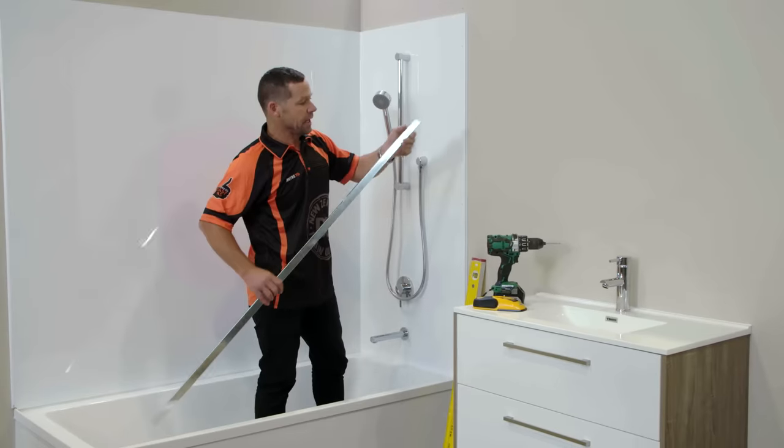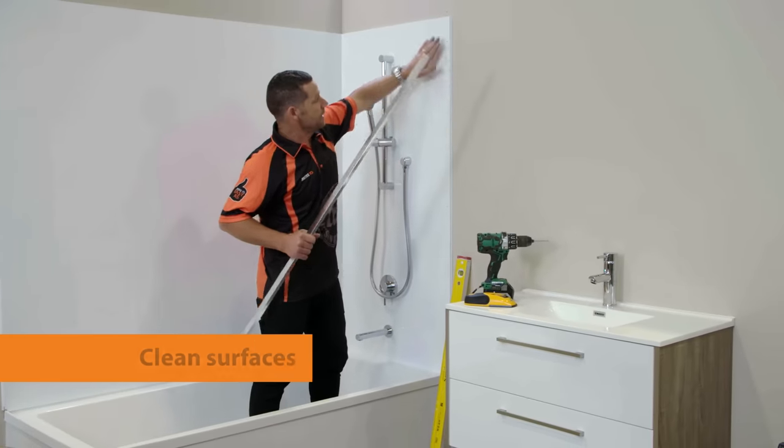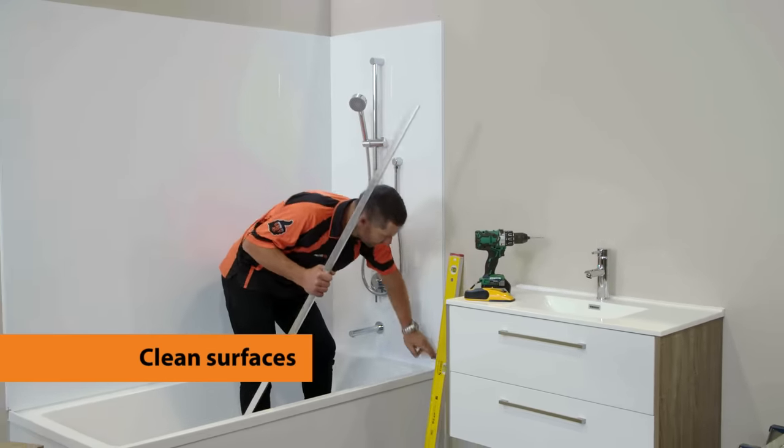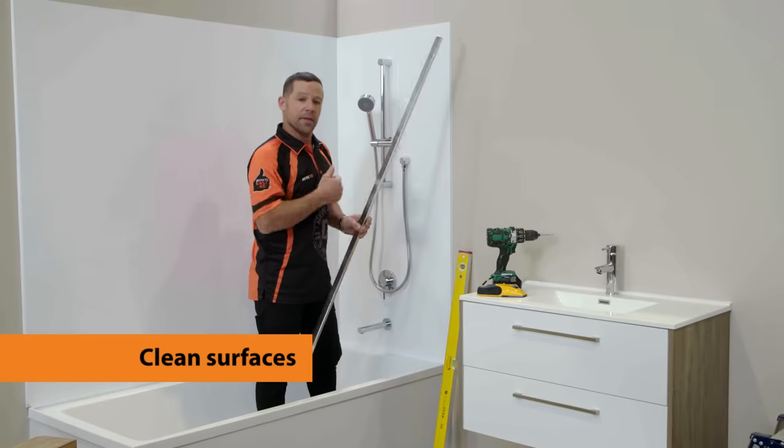So all we've got to do now is just give this a wee little dust down, take any shavings off the wall, and apply our silicon, and then fix in our screws.